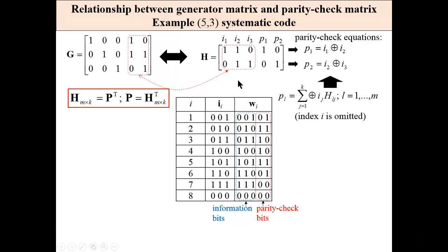For example, this is the generator matrix of code already considered and this is the parity check matrix for this code. So this part is parity matrix of G transpose gives this part of H.